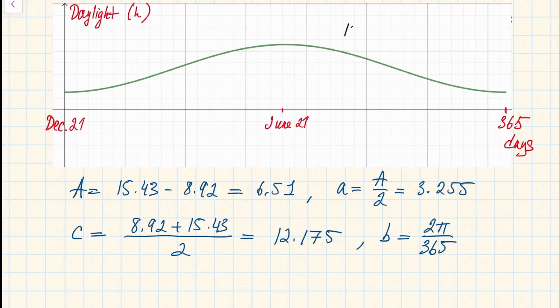So the formula for this function will be 12.175 minus 3.255 times cosine of 2π divided by 365 times t. Of course the reason I put minus instead of plus is because this cosine function here is flipped upside down. Right at time zero on December 21st, our daylight is the shortest, so that's where this function takes the minimum value rather than the maximum.